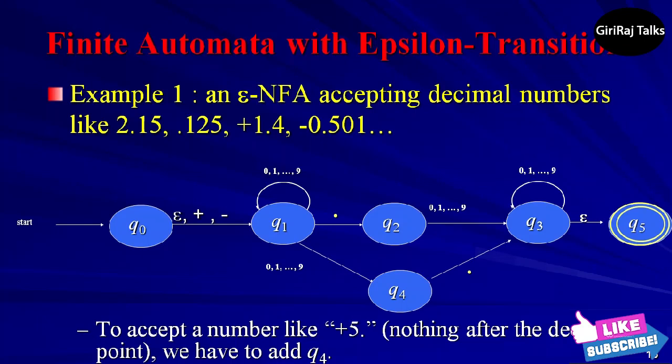Of particular interest is the transition from Q0 to Q1 on any of epsilon, plus, or minus. State Q1 represents the situation in which we have seen the sign if there is one and perhaps some digits but not the decimal point. State Q2 represents the situation where we just seen the decimal point and may or may not have seen prior digits.